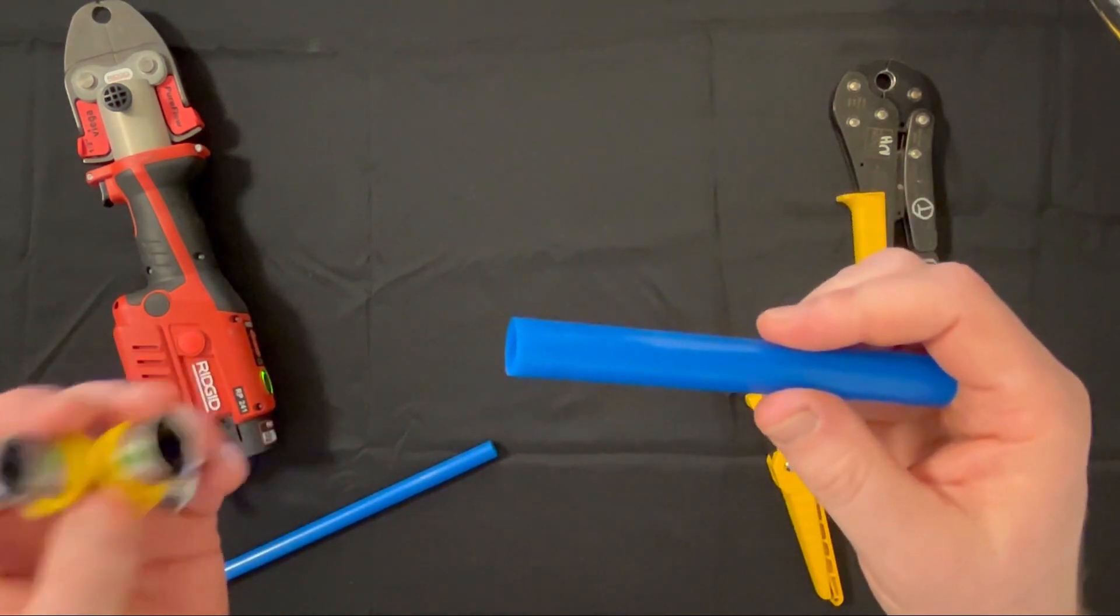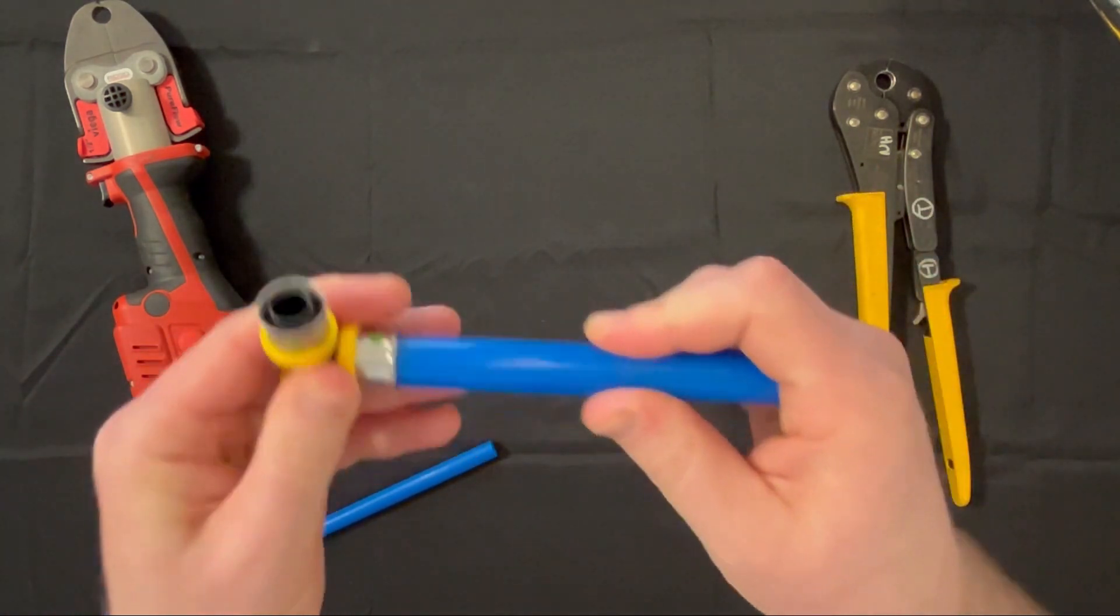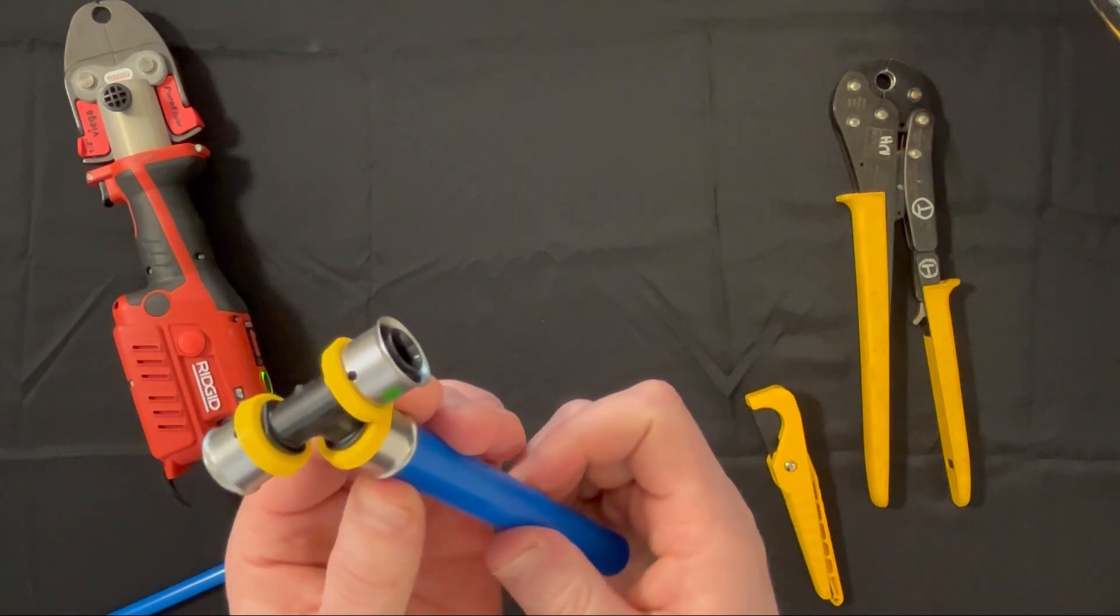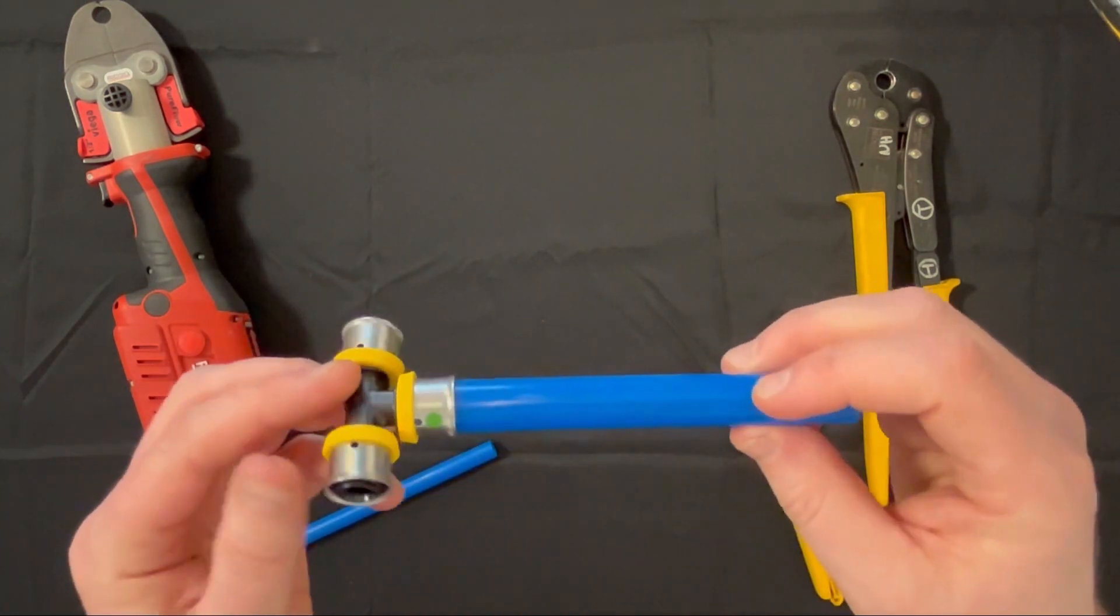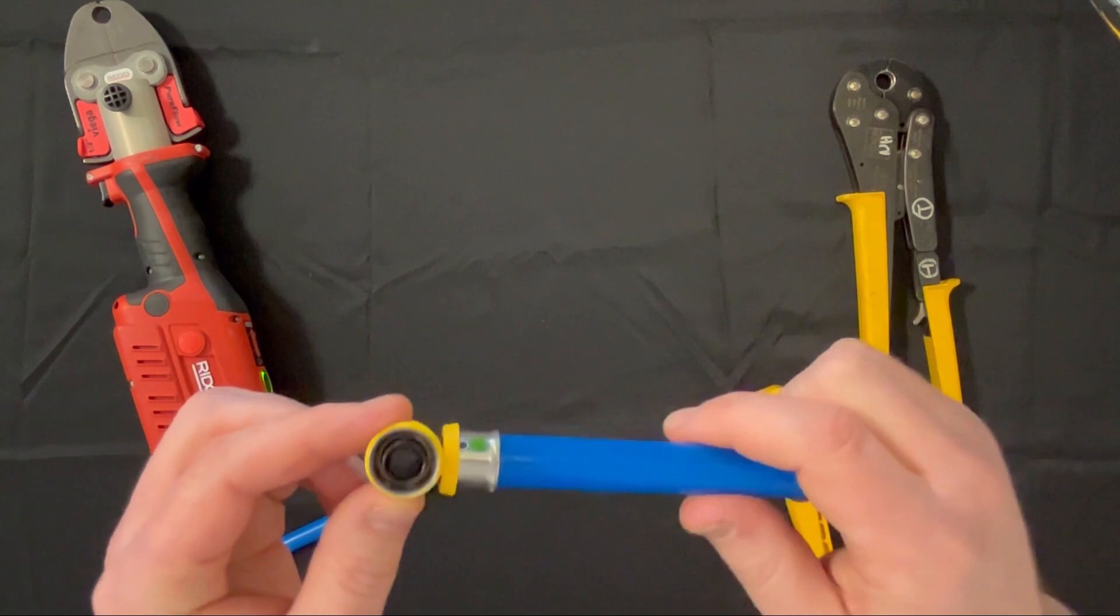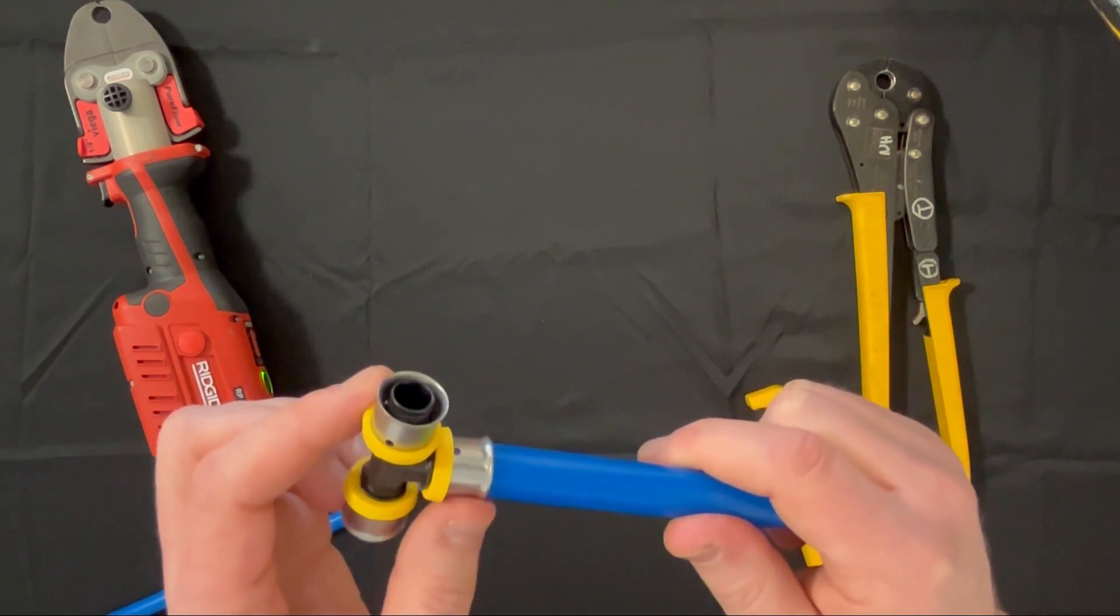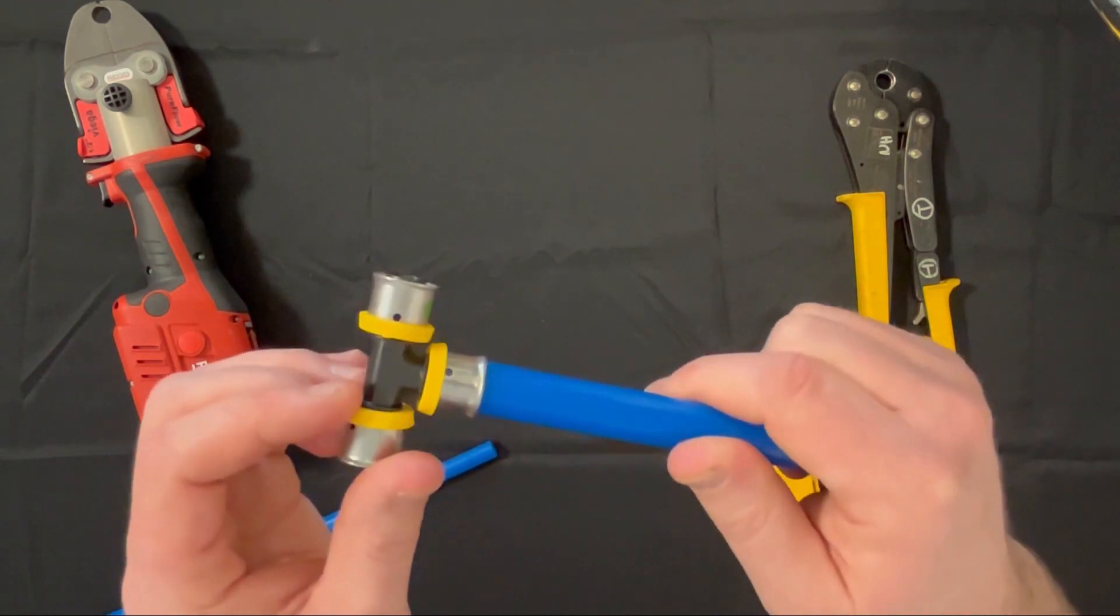We then want to take the fitting and insert the tubing to the fitting and sleeve. With a fully inserted fitting, we will see PEX in two out of the three view holes within the sleeve.